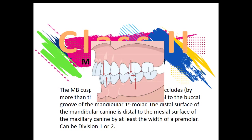If it's just a little bit over and not the full width of the premolar, then we would say the patient is a class 1 with a tendency towards a 2. So it has to be by at least the width of a premolar, which is a bit subjective, but it's all just an approximation. For the canine, the distal surface of the mandibular canine is distal to the mesial surface of the maxillary canine, again by at least the width of a premolar.